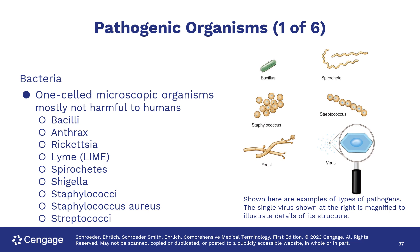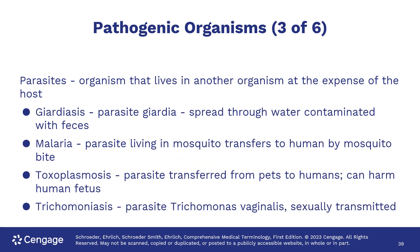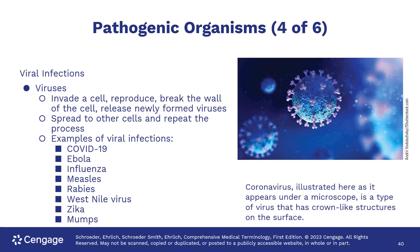A one-celled organism is called a bacterium. Other organisms that can cause disease or act as pathogens include antibiotic-resistant bacteria like MRSA, fungus like a yeast infection, and parasites like giardia. And viruses, of course, can also cause disease.